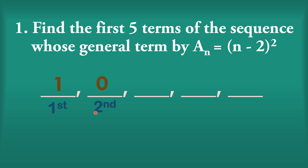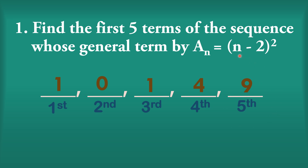Second term: replace n by 2. So 2 minus 2 is 0, and 0 squared is 0. Third term: replace n by 3. So 3 minus 2 is 1, and 1 squared is 1. Fourth term: replace n by 4. So 4 minus 2 is 2, and 2 squared is 4. Fifth term: replace n by 5. So 5 minus 2 is 3, and 3 squared is 9.